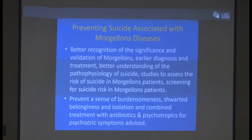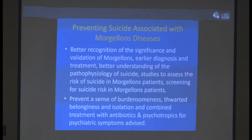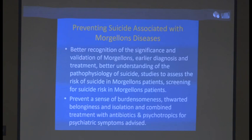How do we prevent suicide associated with Morgellons? Better recognition and validation of Morgellons, earlier diagnosis and treatment, better understanding of the pathophysiology of suicide, studies to assess the risk of suicide in Morgellons patients, screening for suicidal risk, preventing a sense of burdensomeness, thwarted belongingness, and isolation, and combined treatment with antibiotics and psychotropics for psychiatric symptoms.